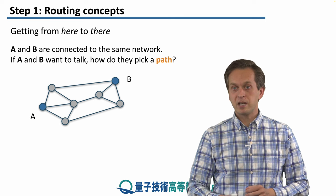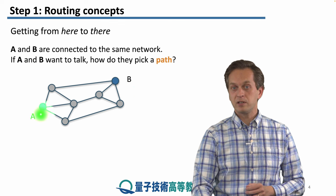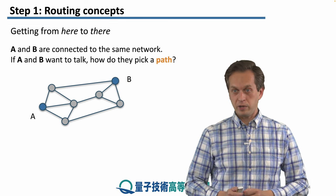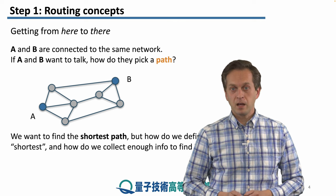For concreteness, throughout this step, we're going to consider the following network that's composed of seven different network nodes connected in a particular topology that you can see there.